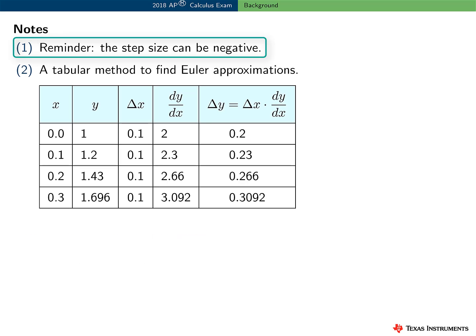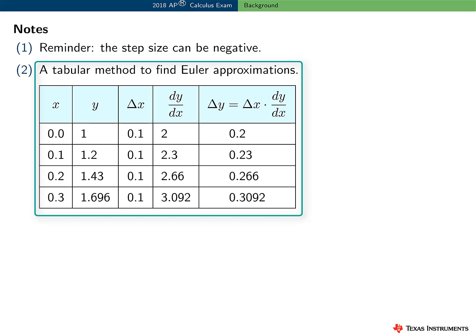Here are two final notes. And just a reminder again, the step size can be negative. For example, h could be minus 0.05. And some people like to use this handy tabular method to find Euler approximations. I think this is pretty logical, and it's convenient to use on the AP Calculus exam, especially on non-calculator active Euler's method questions.